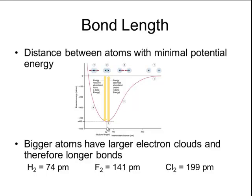Comparing fluorine and chlorine — they are both halogens in the same group, but chlorine is below fluorine on the table. Because it is lower in the group, it has a larger atomic radius and therefore requires a longer bond length of 199 picometers.